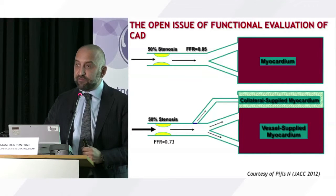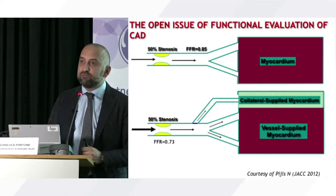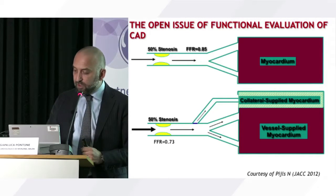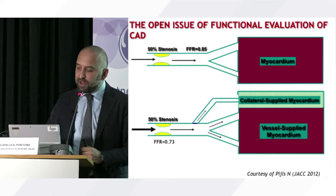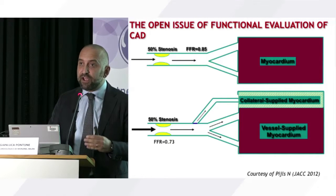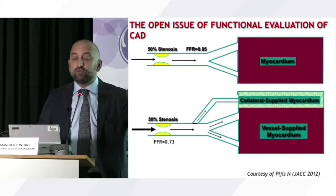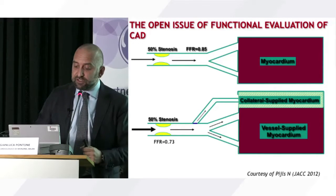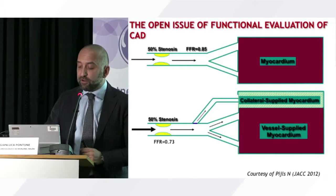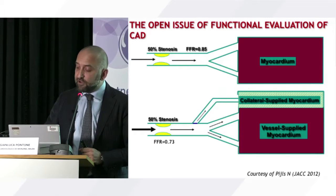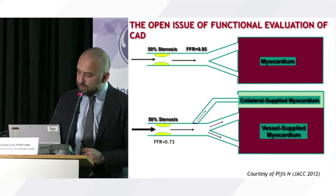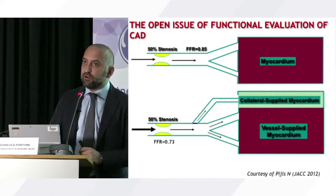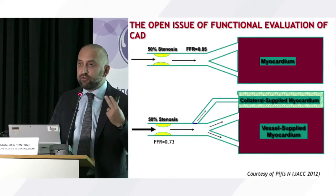A 50% stenosis with a normal invasive FFR can become pathologic if the same stenosis has to provide blood to additional territory due to concomitant occlusion of another vessel — the same stenosis may be associated with a pathologic FFR because the flow is not enough for both territories including collateral territory. Invasive FFR is very useful in clinical practice, as demonstrated in the FAME 1 and FAME 2 studies, proving it is the most powerful tool for revascularization decisions during catheterization for intermediate lesions.